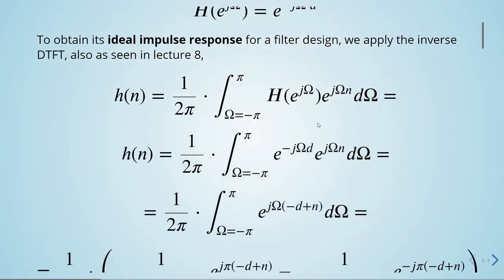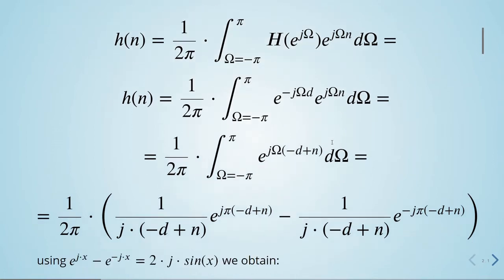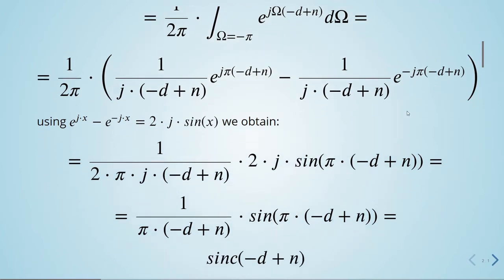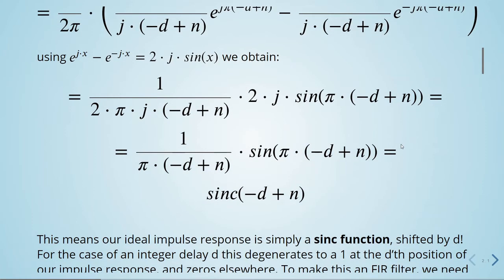So after all these mathematical manipulations here, important to remember also these exponential trigonometry properties. And when we replace things, we find out that the ideal impulse response is a sinc function shifted by d.